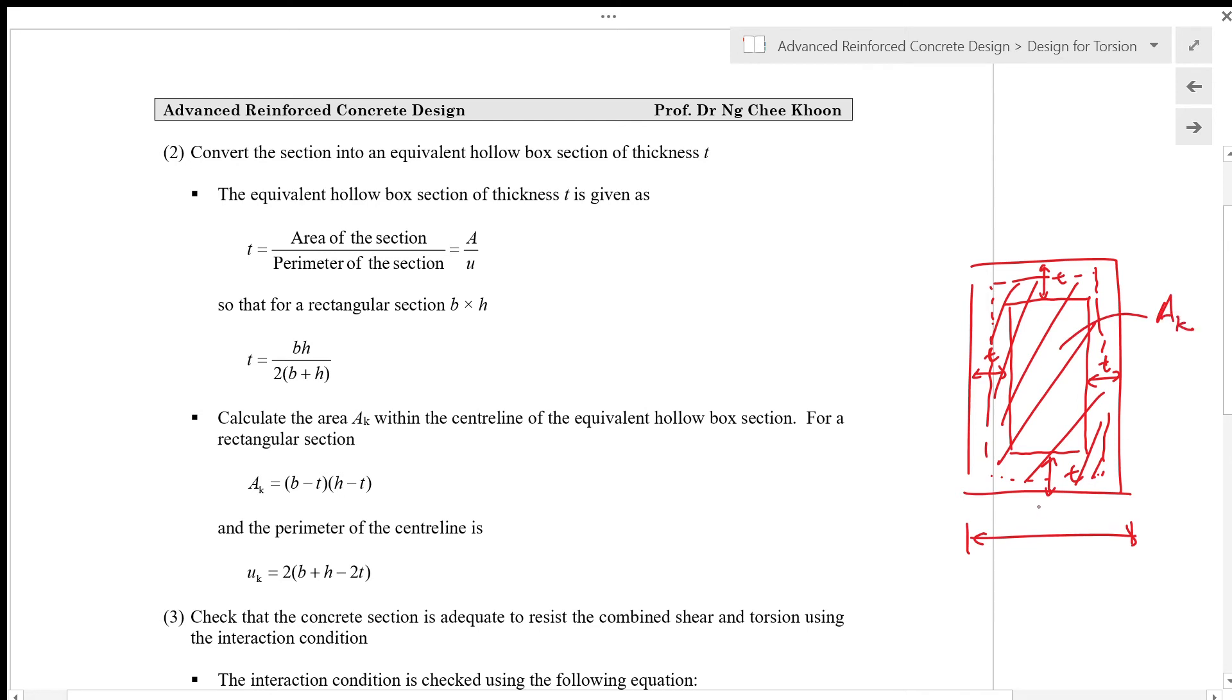When this is B and this is H, then the area AK will be (B - T) × (H - T). And the perimeter of the center line UK, which is the perimeter of the area AK, is 2(B + H - 2T).